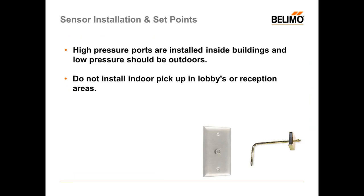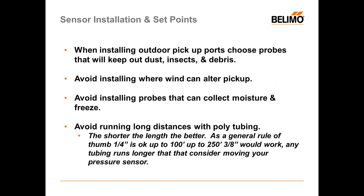Let's talk about sensor installation and set points. The high pressure ports for your differential pressure sensors should be installed inside the building; the low pressure ports are always outdoors. Some places not to install the indoor sensor: a lobby or a place that will have frequent door openings — sudden gusts through the door can make the sensor act erratically. Generally, you want to install the sensor on the lowest floor. When installing the outdoor pickup ports, choose probes that will keep out dust, insects, and debris. Avoid installing where wind can dramatically alter the pickup — don't put it on the windward side of a building.